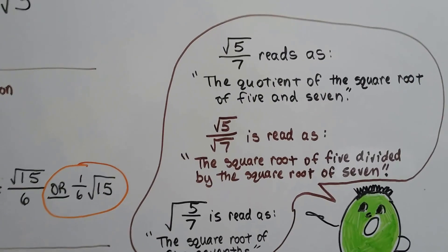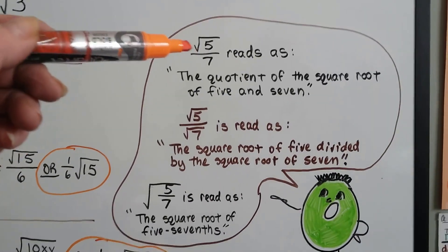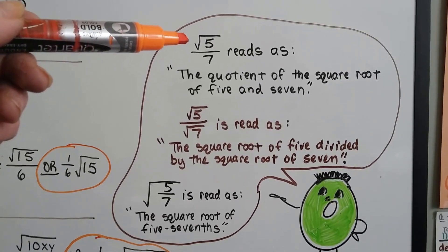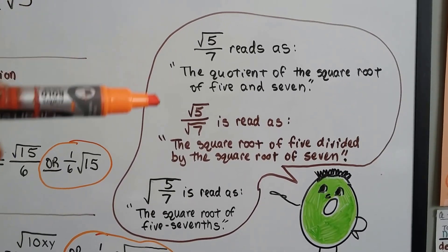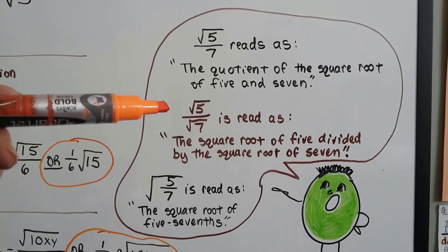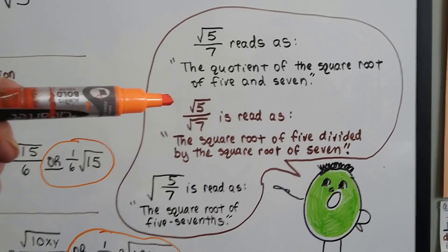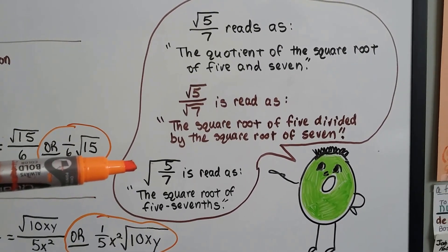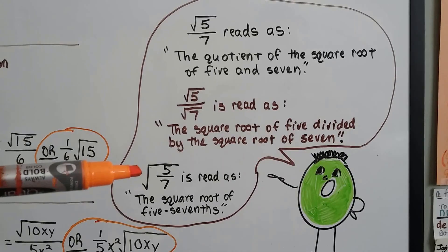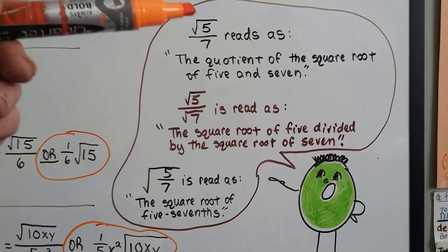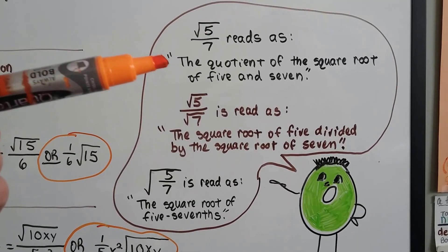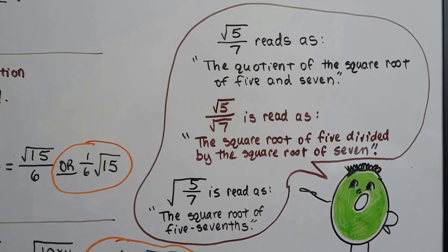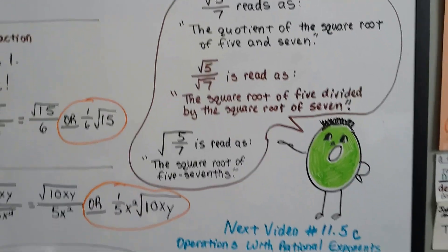Just for information: when you see it written like this, we read it as 'the quotient of the square root of 5 and 7.' This is read as 'the square root of 5 divided by the square root of 7.' And this is read as 'the square root of 5 sevenths.' You can also just say 'the square root of 5 over 7' or 'the square root of 5 divided by 7.'